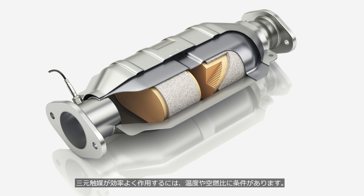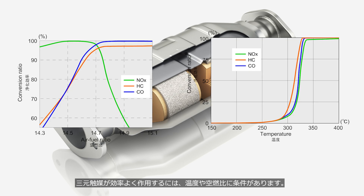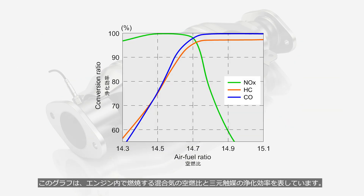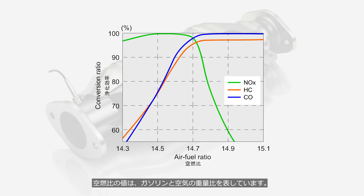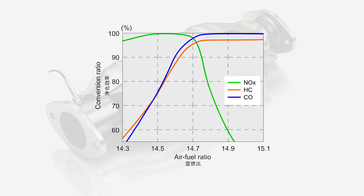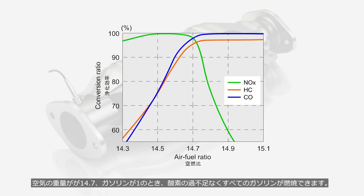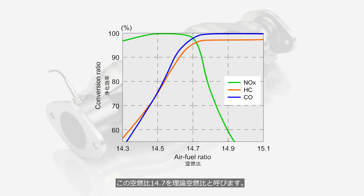For a three-way catalyst to function efficiently, certain conditions of temperature and air-fuel ratio must be met. This graph shows the air-fuel ratio of the mixture combusted in the engine and the conversion ratio of the three-way catalyst. The air-fuel ratio value represents the weight ratio of gasoline to air. When the weight of air is 14.7 and gasoline is 1, all the gasoline can combust completely without any excess or deficiency of oxygen. This air-fuel ratio of 14.7 is called the stoichiometric air-fuel ratio.